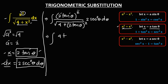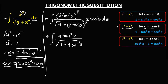Simplifying, we have the integral of 2 squared which is 4, times tangent squared theta, over the square root of 4 plus 4 tangent squared theta, times 2 secant squared theta d theta.